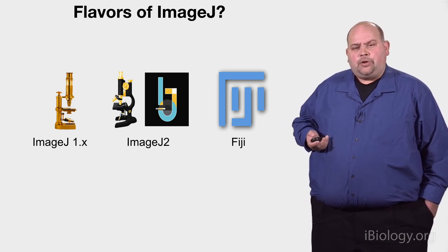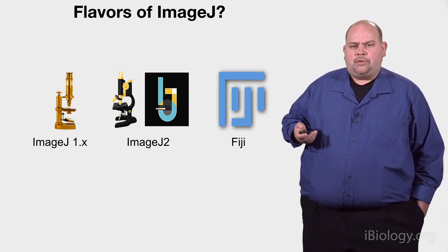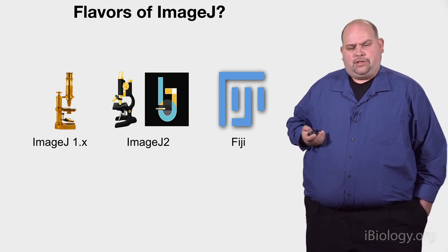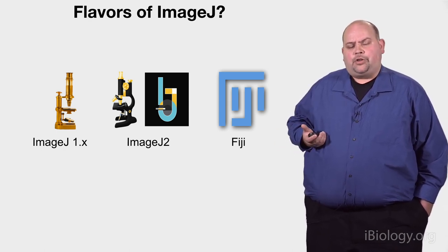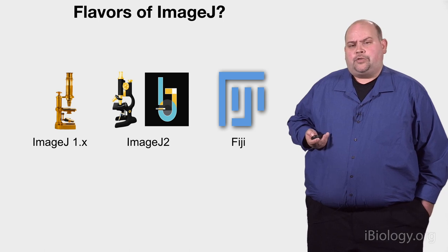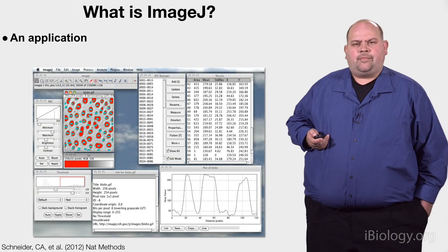Even though it can be a little confusing thinking about ImageJ1 and ImageJ2 and Fiji, just think of ImageJ and Fiji together, because Fiji contains all the goodness of ImageJ that you would want to use for image analysis of bioimaging.